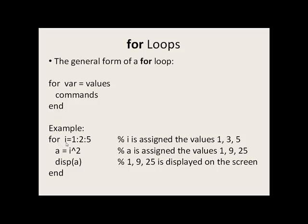We say for, and i is our loop variable, will equal 1:2:5. We know from previous lessons this means 1, 3, and 5. The commands that will be executed will be: a is equal to i squared, and then display a. When we come to the end, we go back up to the top of the loop. So what will happen is i will take on the values of 1, then 3, then 5 every time the loop is completed.